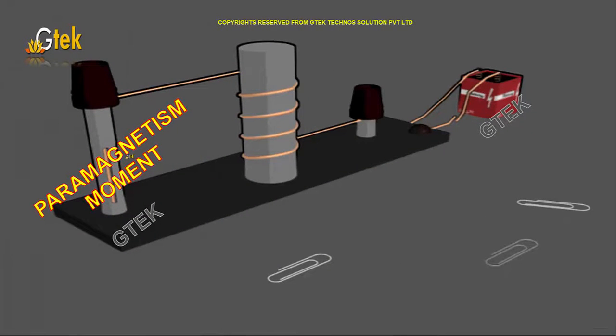Magnetic moment is one of the most important properties which we need to discuss. Apart from that, paramagnetism moment—you are able to see the nature of attraction. You can see here it's getting attracted.